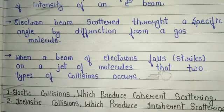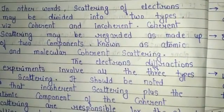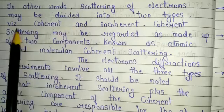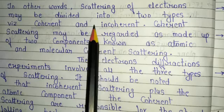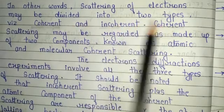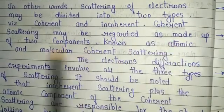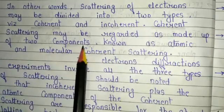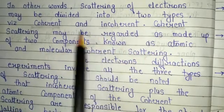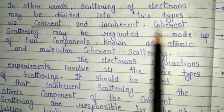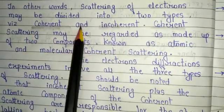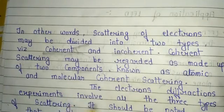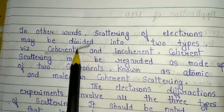These are the basic concepts of the Virial equation. In other words, scattering of electrons may be divided into two types: coherent and incoherent. Coherent scattering may be regarded as made of two components known as atomic coherent scattering and molecular coherent scattering.